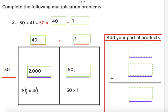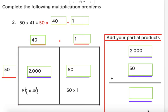Now let's multiply 50 times 1. We don't have to take away any zeros here because anything times 1 is that number — so 50 times 1 is 50. Same as before, add your two partial products: 2,000 plus 50 equals 2,050.